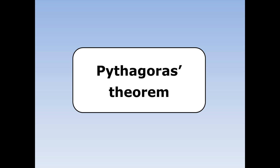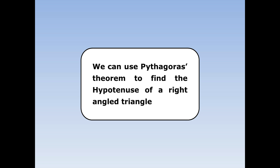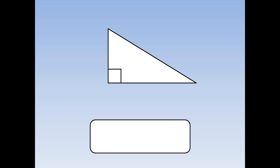Pythagoras' Theorem. We can use Pythagoras' Theorem to find the hypotenuse of a right-angled triangle. For any right-angled triangle, we've got two shorter sides, which we can label A and B — it doesn't really matter which way round they go — and we have the longer side, or the hypotenuse, which we label C. Pythagoras' Theorem says that c squared equals a squared plus b squared, and we can use this to work out the length of the hypotenuse.